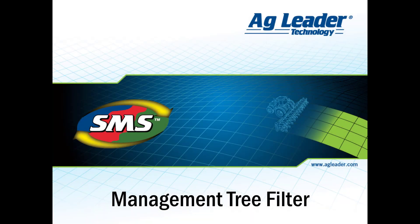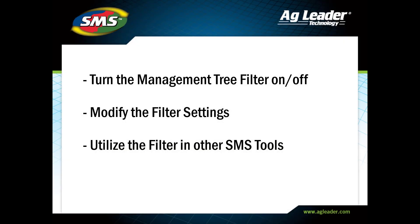In this tutorial, you will learn how to select what data you want to have displayed in your management tree. The management tree filter can assist when only working with specific data, such as only 2020 grain harvest or only data for a particular grower. You will learn to use the management tree filter, modify the filter settings, turn the filter off, and utilize the filter settings in other areas of the software.